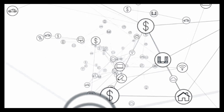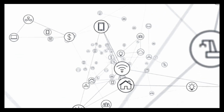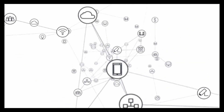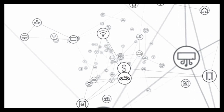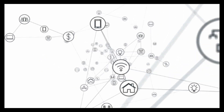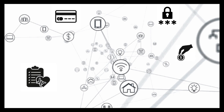The internet is an open place. When you're sending digital information over the internet, the information you are sending can be read by anyone. Still, we share a lot of sensitive information over the internet. We're sending out our credit card information, our health records, bank accounts, and passwords. All of this information can be picked up by someone who's listening, so we need a way to keep this information secret when we're sending it over the internet.